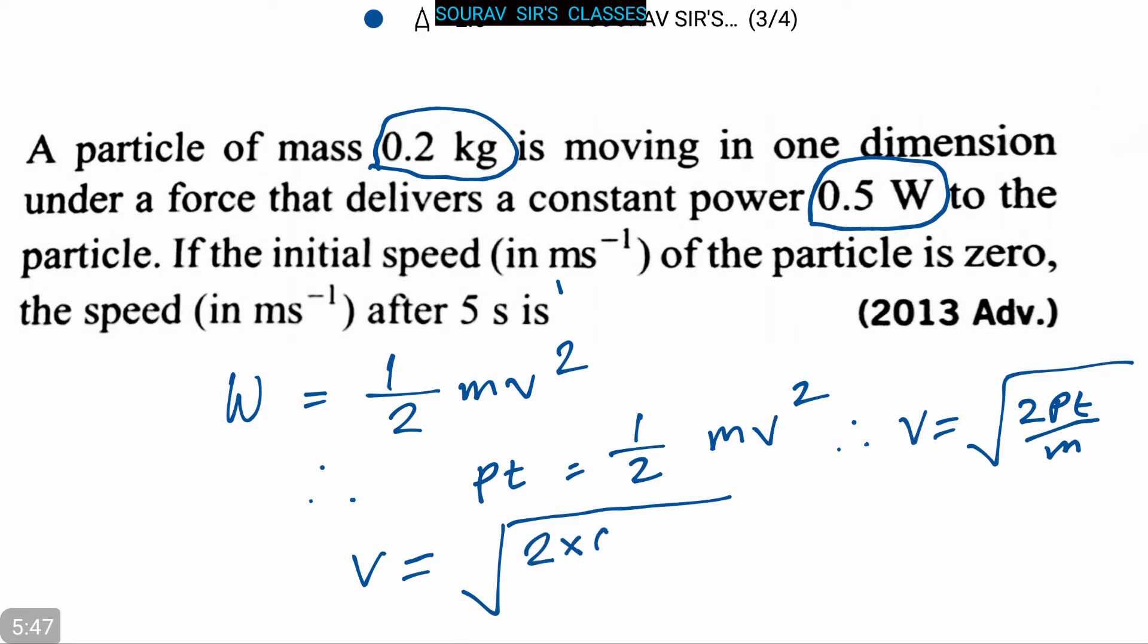V equals the square root of (2 × 0.5 × 5 / 0.2), which equals 5 meters per second. So if the initial speed of the particle is zero, the speed after five seconds is 5 meters per second.